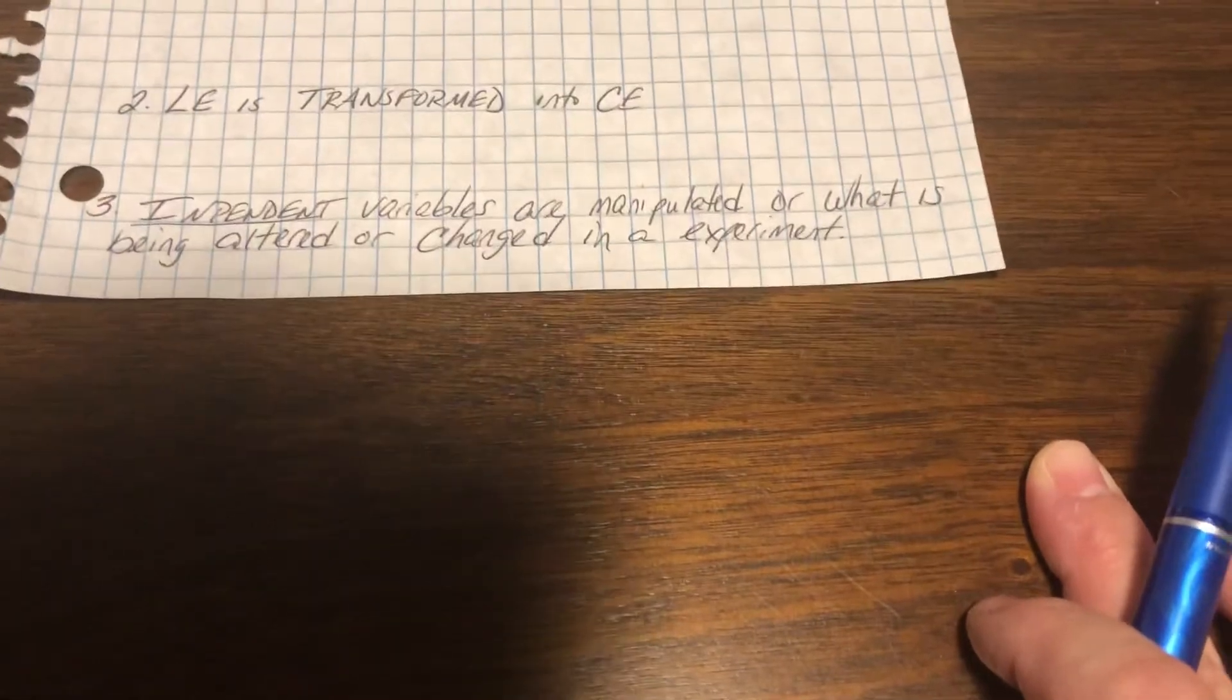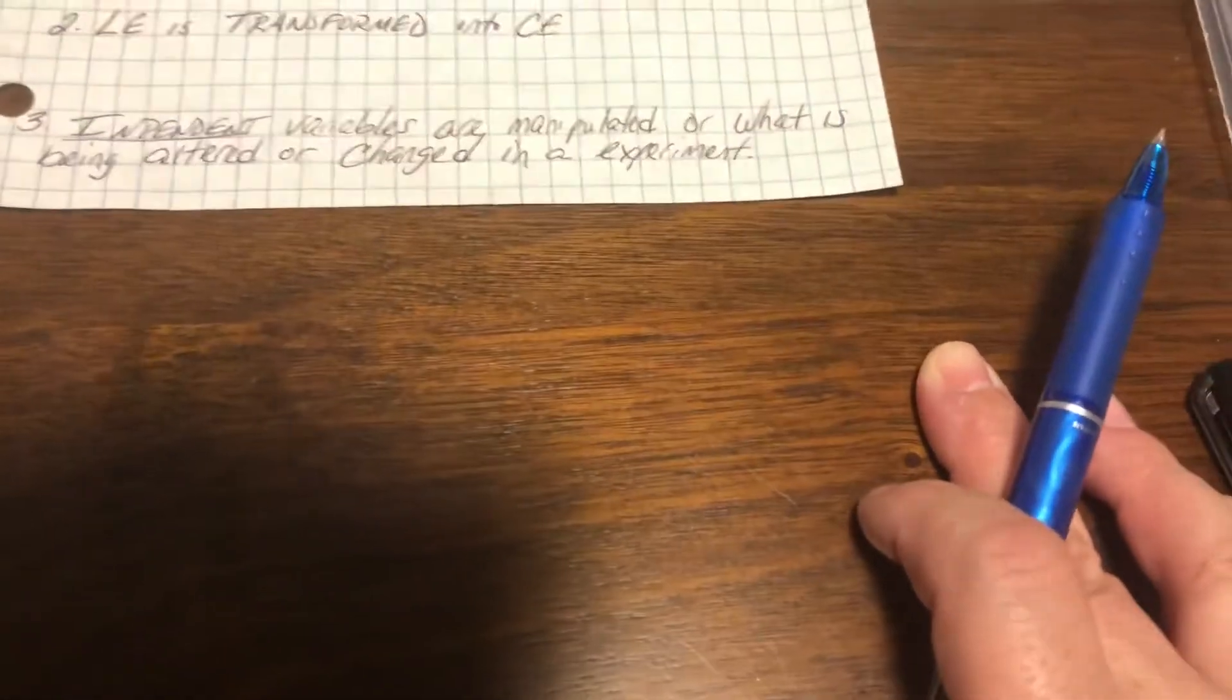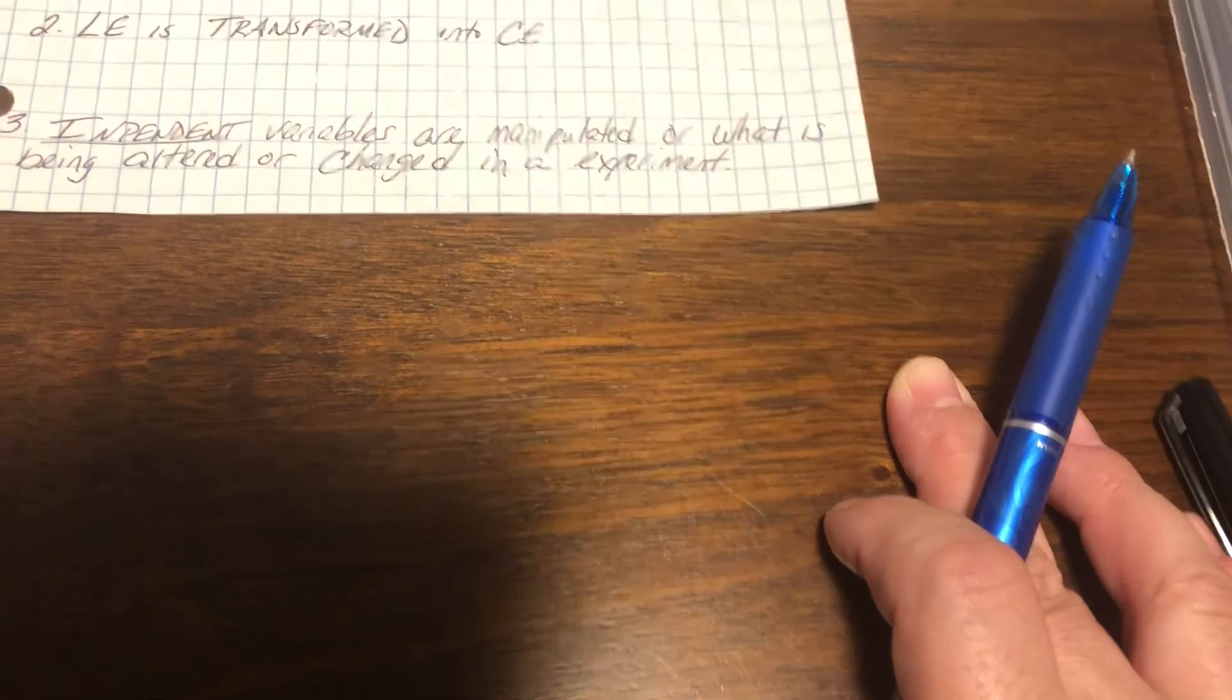Number three, independent variable is what you are manipulating or you are altering in an experiment.